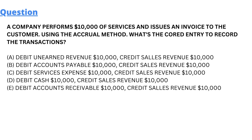Option A: debit unearned revenue $10,000, credit sales revenue — it's wrong. Option B: debit accounts payable $10,000, credit sales revenue $10,000 — it's wrong as well. Option C: debit service expense $10,000, credit sales revenue $10,000 — it's wrong as well. Option D: debit cash $10,000, credit sales revenue $10,000 — it's wrong as well.